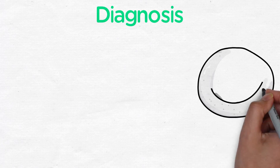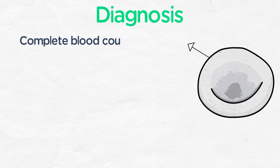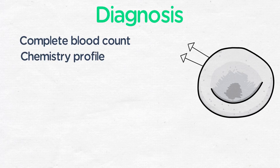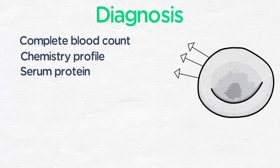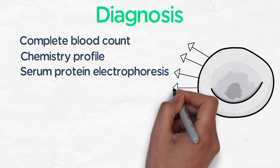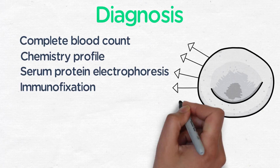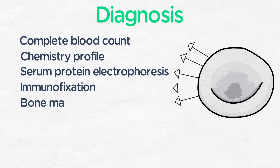To diagnose a patient with multiple myeloma, you want to do a complete blood count to see if they have anemia, and a chemistry profile to see if they have hypercalcemia or renal insufficiency. You also want to look for the monoclonal protein by serum protein electrophoresis and immunofixation, which gives you the type of immunoglobulin they're secreting, as well as serum-free light chain, and of course, the bone marrow biopsy.